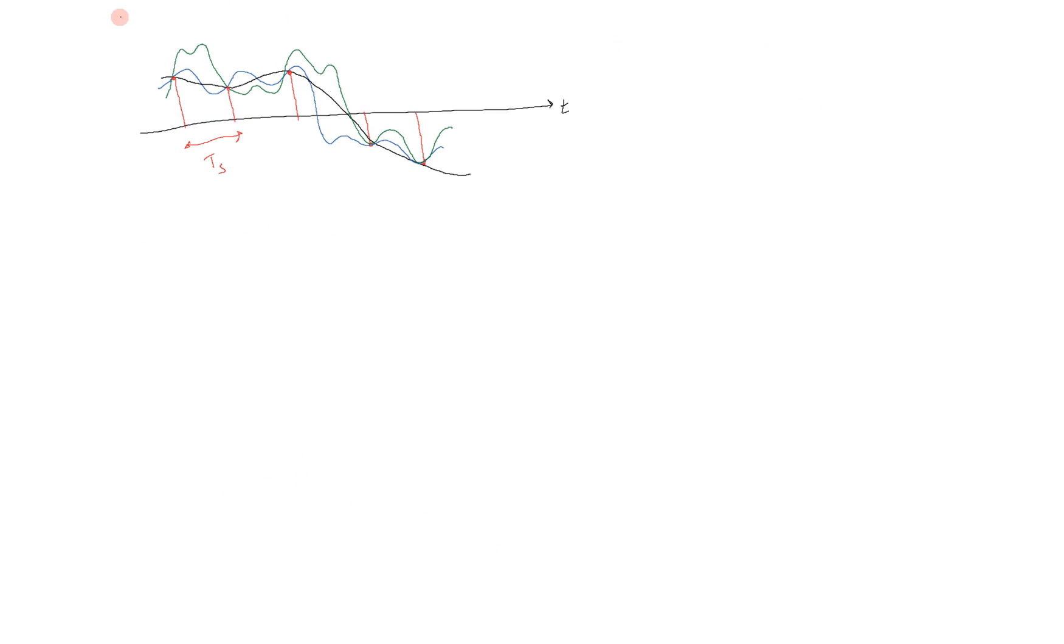We can gain some further intuition by thinking about how fast we have to sample a particular continuous time signal in order to capture all of its variations. So suppose now we are starting with a continuous time signal that looks like this. And our first attempt at sampling is going to place a sample here, here, and here, and so on, spaced by, let's say, t sub s 1.